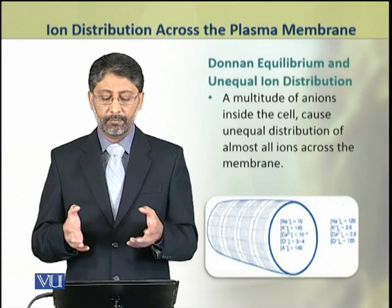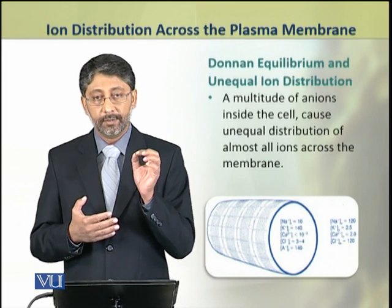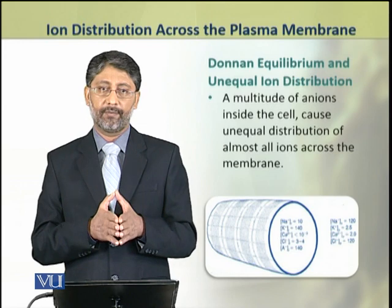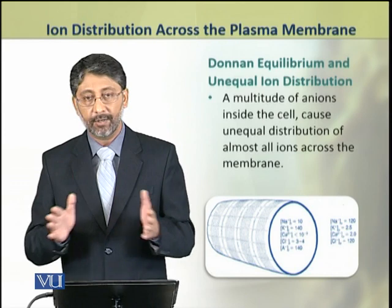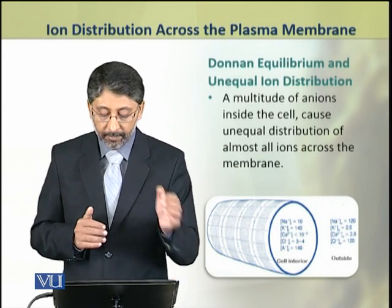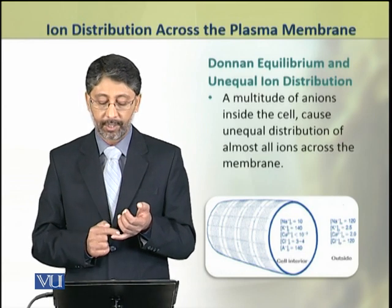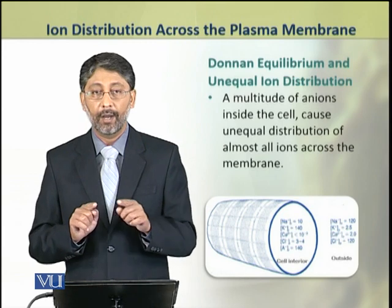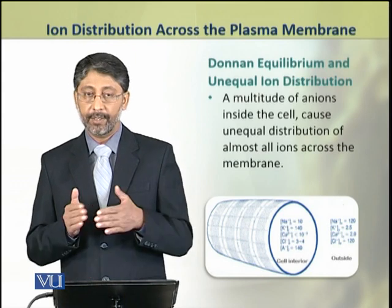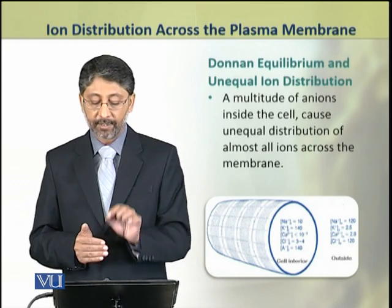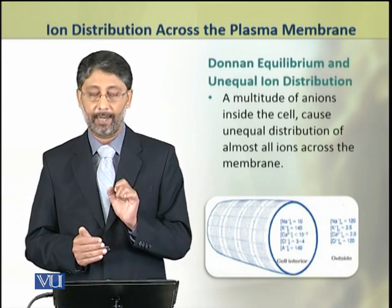Because of the presence of many anions inside the cell, all diffusable ions are unequally distributed across the cell membrane. As we can see in this figure, all major species of ions — namely sodium, potassium, calcium, and chloride — are unequally distributed inside and outside the cell. This is all because of the presence of an anion that is highly concentrated inside the cell.